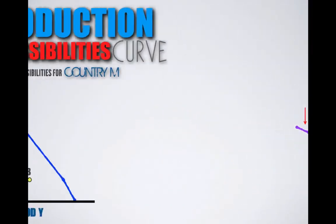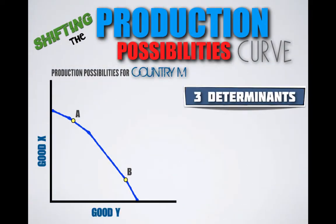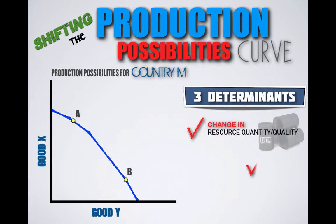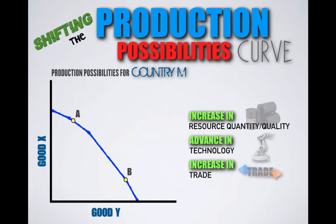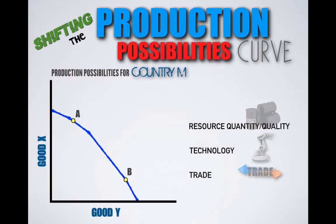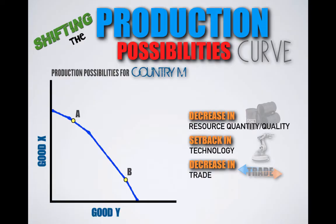So what shifts PPCs? There are three determinants that can cause a change in a country's ability to produce and therefore shift its production possibilities curve. The first is a change in resource quantity or quality. The second is a change in technology. And the third is a change in trade. An increase in resource quantity or quality, an advancement in technology, or an increase in trade will cause economic growth and an outward shift. A decrease in resource quantity or quality, a setback in technology, or a decrease in trade will cause a country's capacity to produce to contract and result in an inward shift.